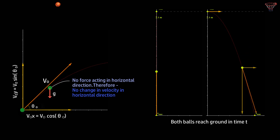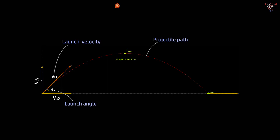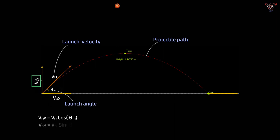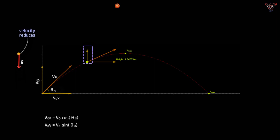Before we get into the equations of projectile motion, let us see how the velocity of a projectile changes as it moves from its initial position to its final position. At time t = 0, the initial velocity v₀ is at angle theta and has horizontal component v₀ₓ = v₀ cos θ₀ and vertical component v₀ᵧ = v₀ sin θ₀. After some time, vᵧ reduces — as expected, since gravity constantly pulls the ball down — so we show the vᵧ component with a smaller vector length.